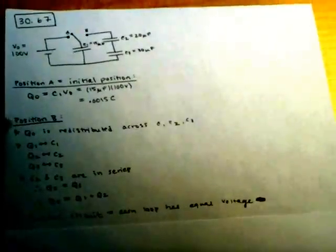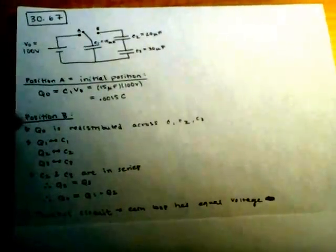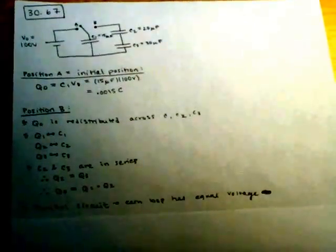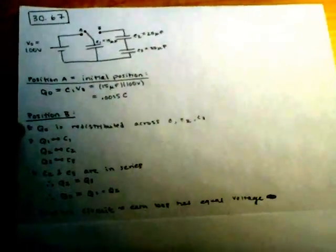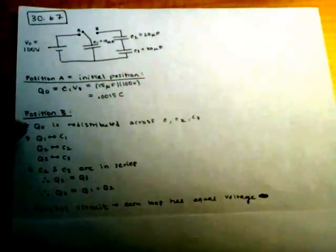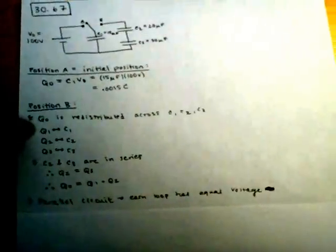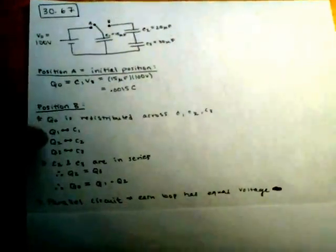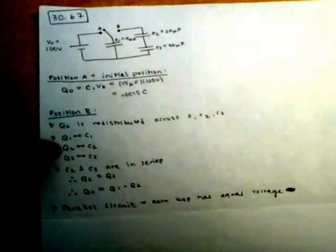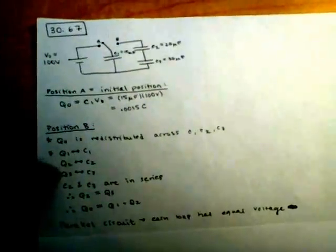In position B, we have to note a couple things before we solve the problem to make our equations easier. The first one being that Q initial is redistributed across C1, C2, and C3. And just to clarify my variables, Q1 is capacitor 1's charge, Q2 is capacitor 2's charge, and Q3 is capacitor 3's charge.